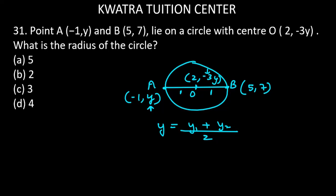So first of all, y is the center -3y. What is the value of y1? It is y. How much is y2? It is 7. So y plus 7 divided by 2. This must equal the y-coordinate of the center.